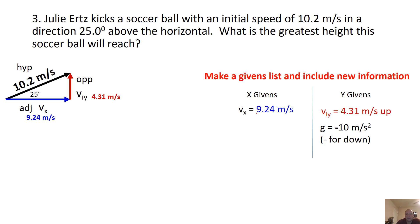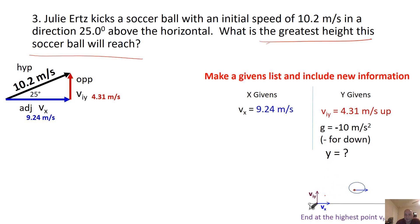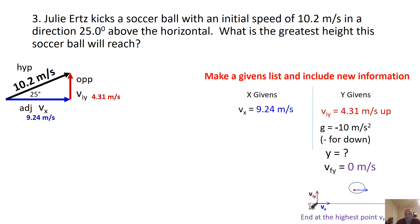Now we have the triangle drawn. We start our givens list: VX is 9.24, VIY is 4.31, and gravity is negative 10. Now, for the greatest height — we need to think about what's happening. At the top of an object's flight, its Y component is zero. So VFY equals zero is a given here, because the greatest height is always at the top of the flight path when the Y velocity stops. The X never stops, but we're not concerned with that.